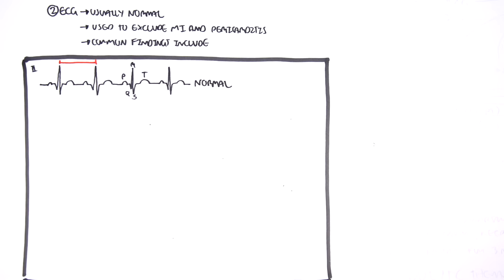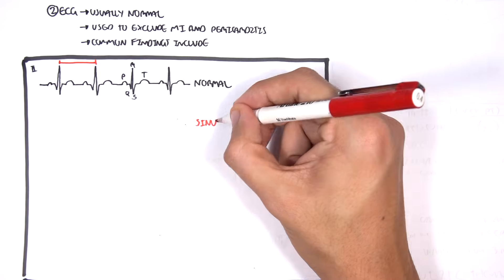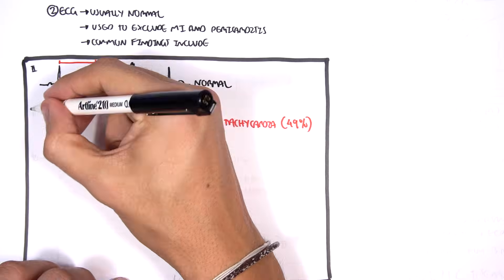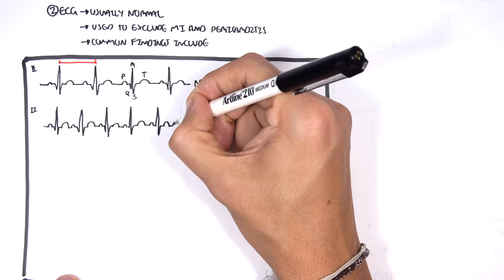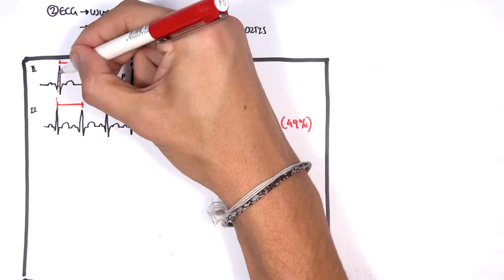In PE, you can see sinus tachycardia in about 50% of cases. This is essentially when your rate increases, so your RR interval shortens. And this you can see in lead two.